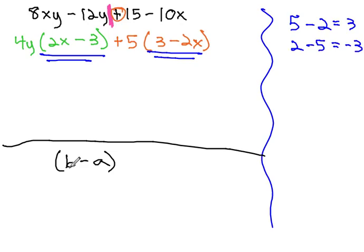Notice what happens when I factor out a factor of negative 1 from the b, minus a. b now becomes negative b, and a becomes positive a.